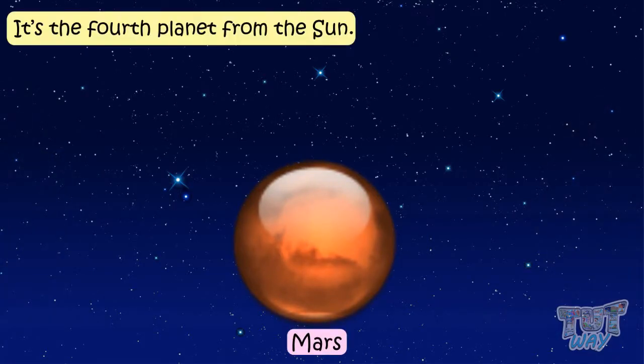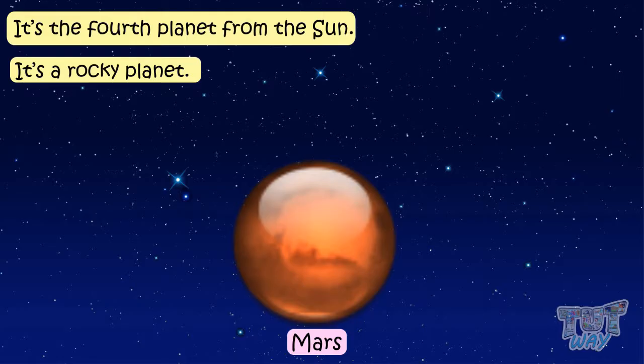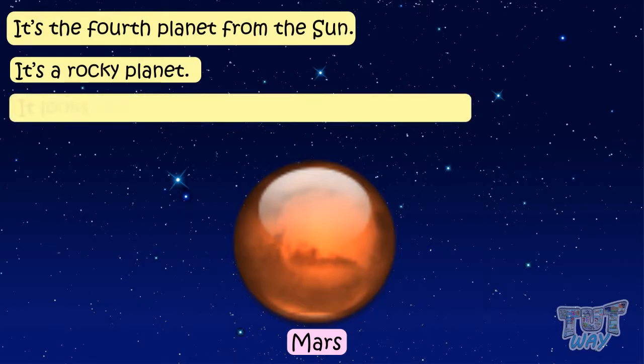Mars. It's the fourth planet from the Sun. It is a rocky planet. It looks red so it is also called the red planet.